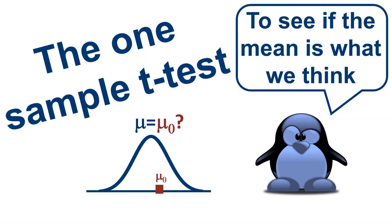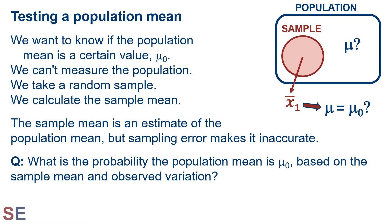The one-sample t-test is used to figure out if the mean of a population is what we think it is. We use it when we're interested in testing a population mean. The basic scenario is that we want to know if the population mean is a certain value, let's call it mu naught. We can't measure the entire population, so we take a random sample instead. We calculate the sample mean as an estimate of the population mean, but sampling error makes it inaccurate. The question the one-sample t-test allows us to answer is: what is the probability the population mean is mu naught, based on the sample mean and observed variation?